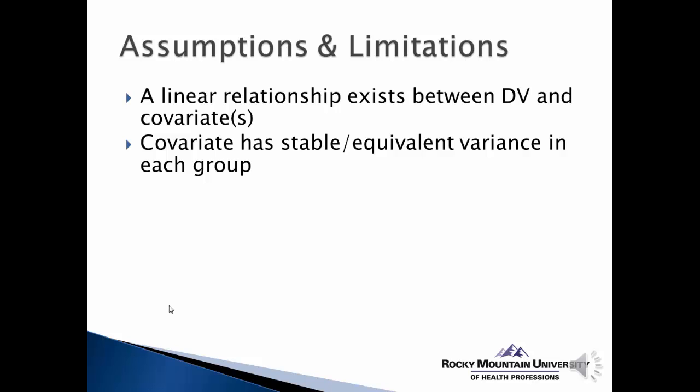The covariate has to have stable or equivalent variance in each group — it has to have the same influence on one group that it might have on another group. Another assumption is that we have to have measured the covariate. So if we think something like age might be a covariate but we haven't measured it for our subjects, we can't control for it in the analysis. Obviously, a covariate has to be something we have measured or are able to measure. And the covariate has to be measured without error — in other words, it's a valid, reliable measure of whatever we think the covariate might be.